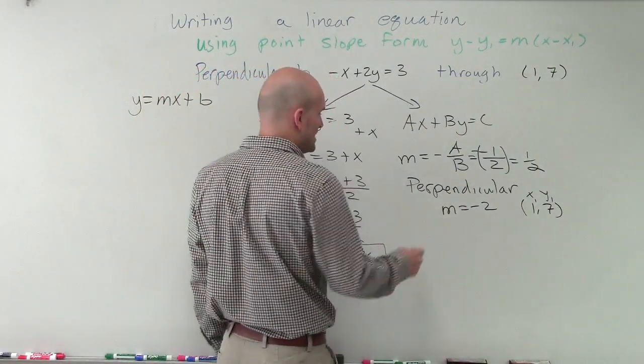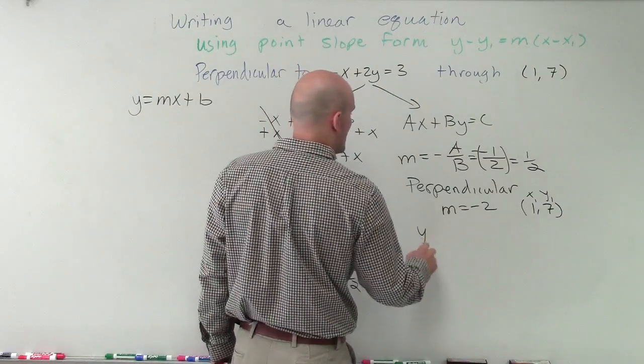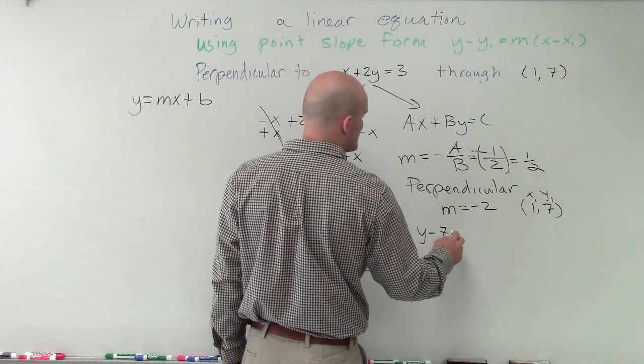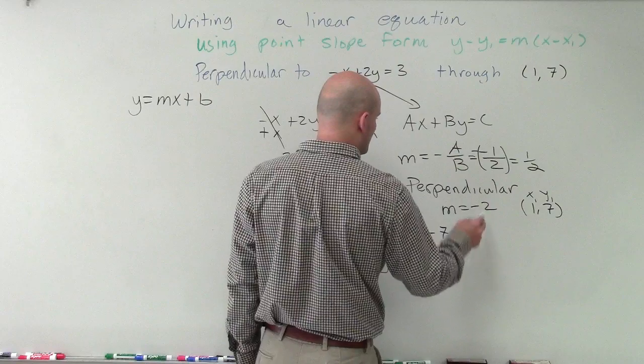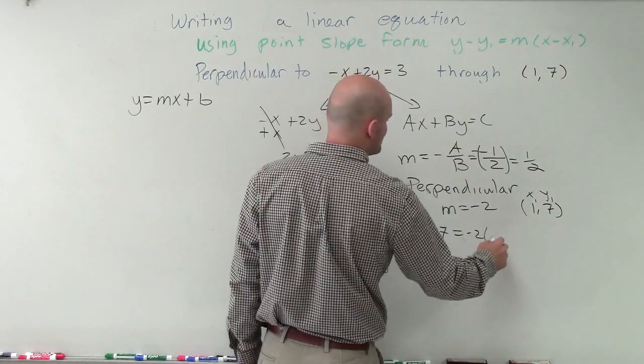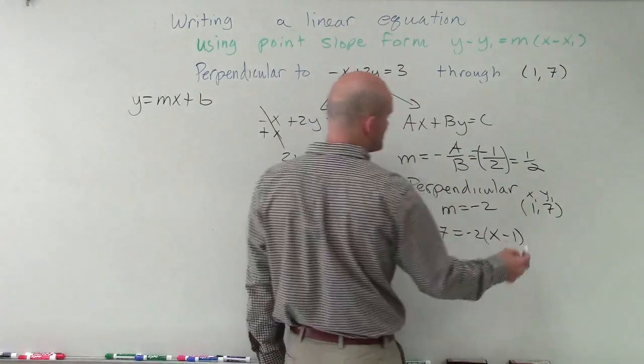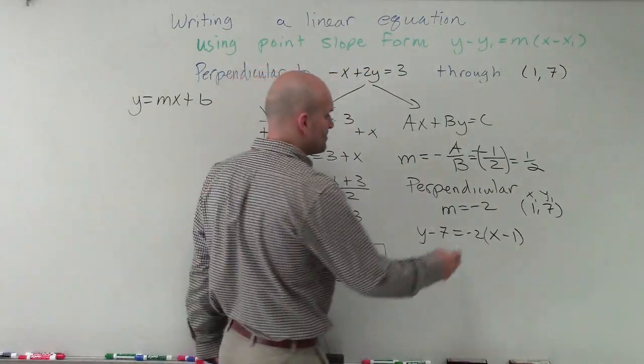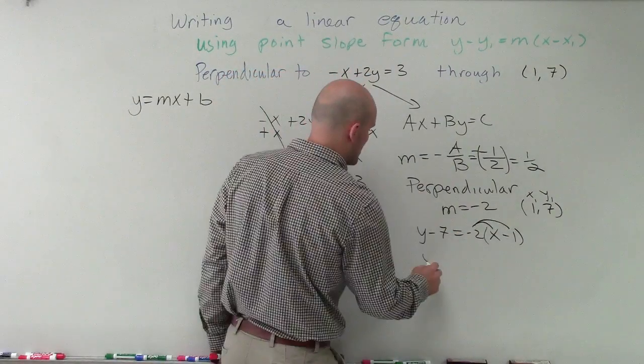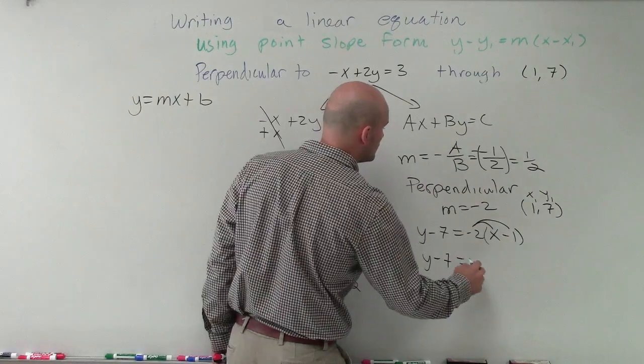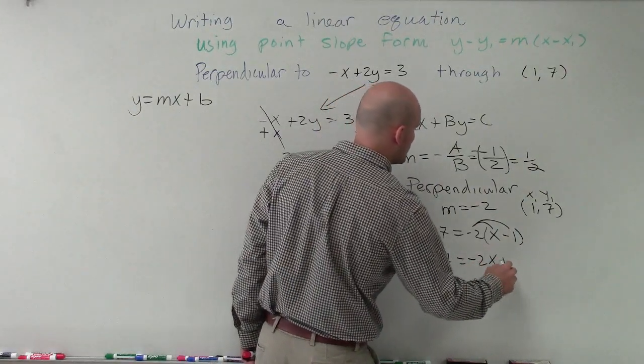Now I'm just going to plug in the information that I have. So I have y - y₁, which is 7, equals m, which is -2, times x - x₁, which is 1. Now I can apply my distributive property. So I have y - 7 = -2x + 2.